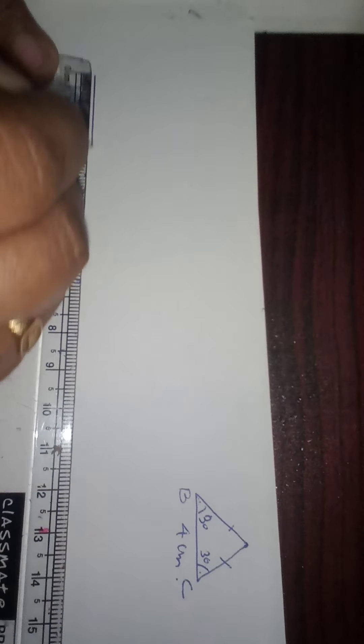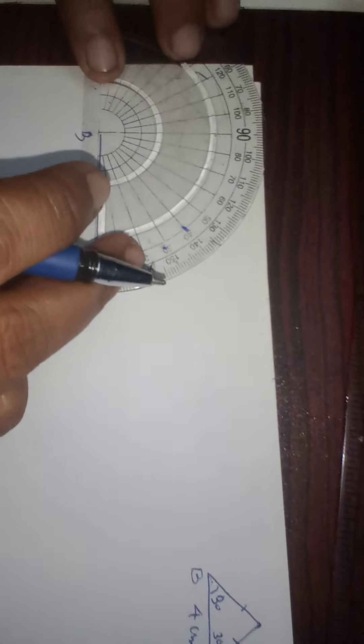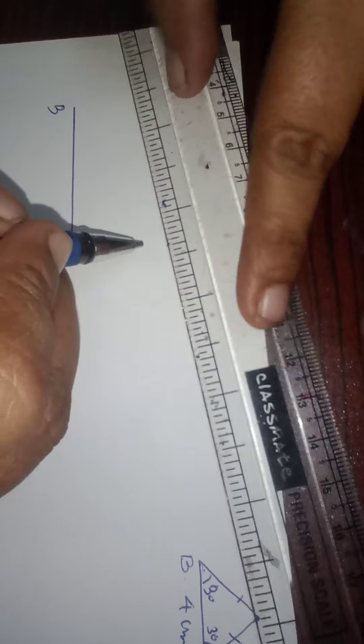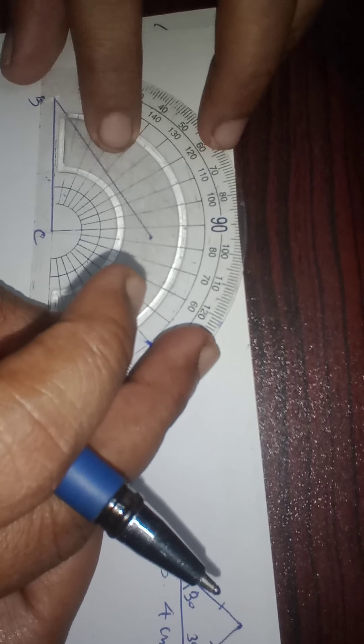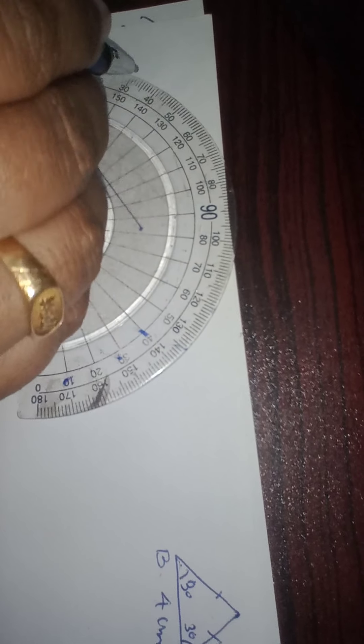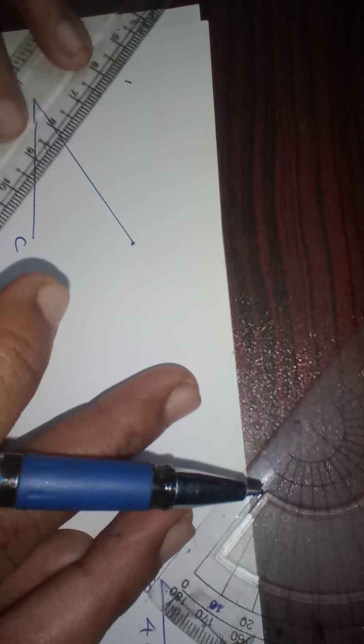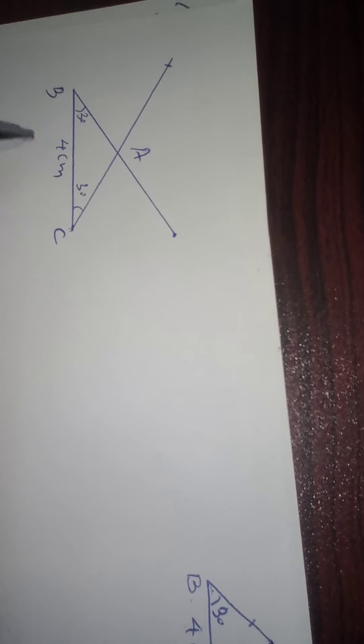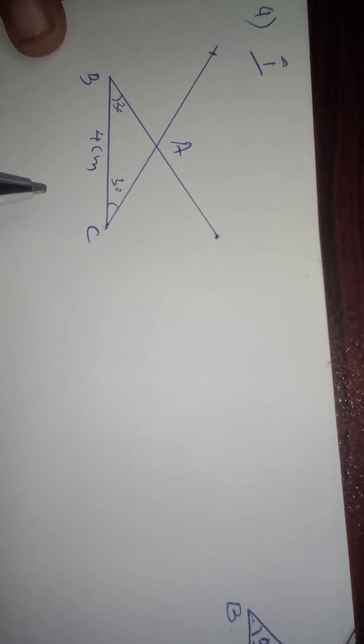Draw the base BC as 4 cm. Using the protractor, draw 30 degrees from B — this gives the direction of AB. At the next point C, draw 30 degrees using the outside measurement — this gives the direction of AC. Join the lines — the intersection gives vertex A. So this is 30 degrees at B, 30 degrees at C, base is 4 cm. That is the isosceles triangle — this is the fourth section, first question.